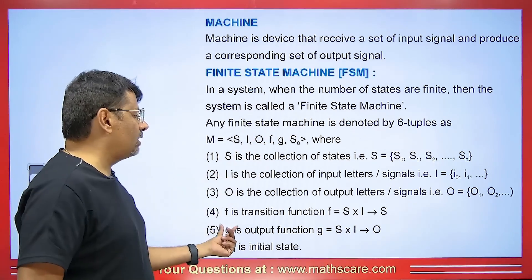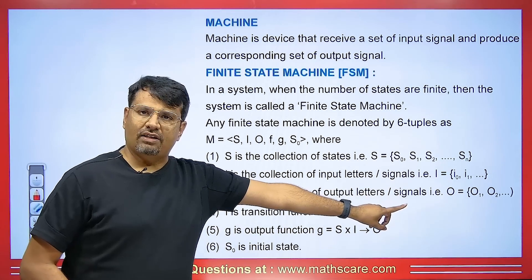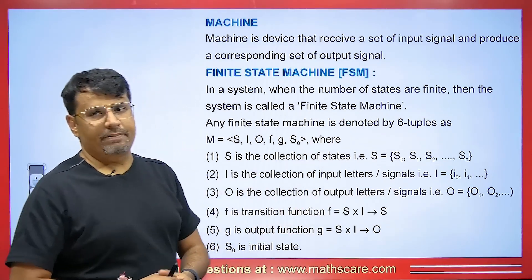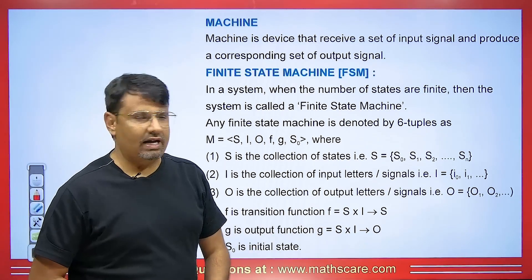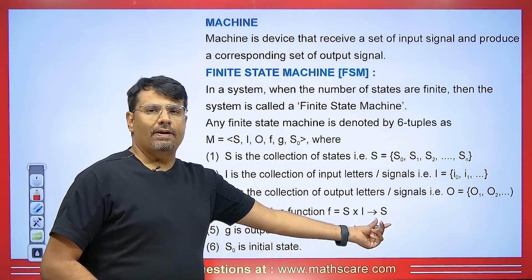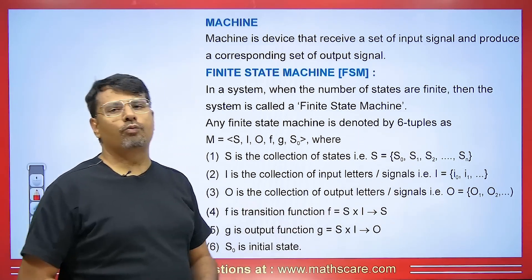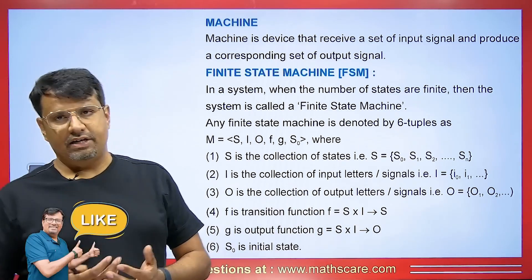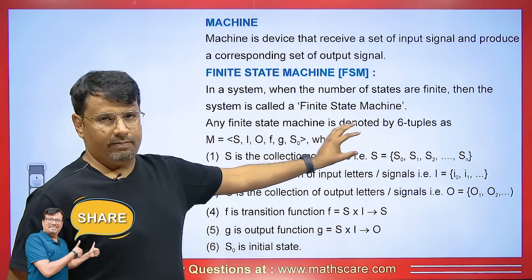F is called the transition function, which maps from S cross I — where S is a state and I is the input — back to a state. G is called the output function which maps from S cross I to O, meaning it goes from a state and input to give us an output. Finally, S0 represents the initial state. These are the six-tuples.